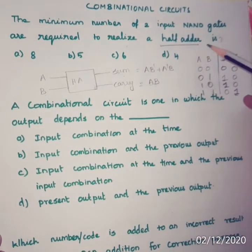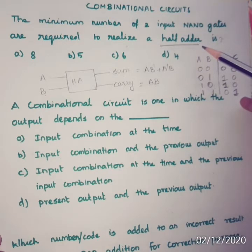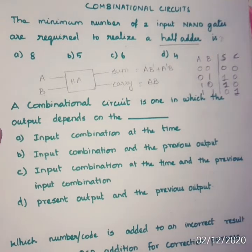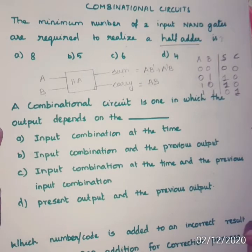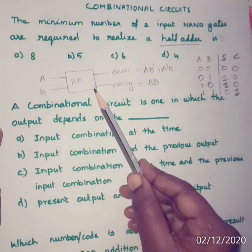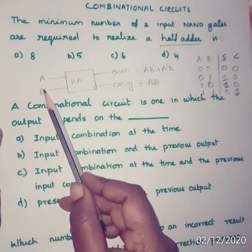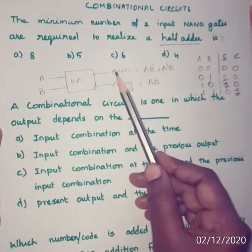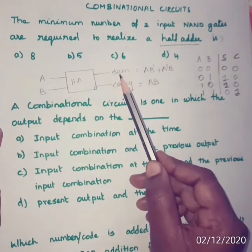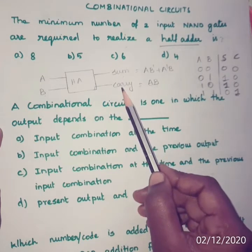A half adder is a combinational circuit which is used to add two binary digits. It has two inputs, A and B, and two outputs: sum and carry.